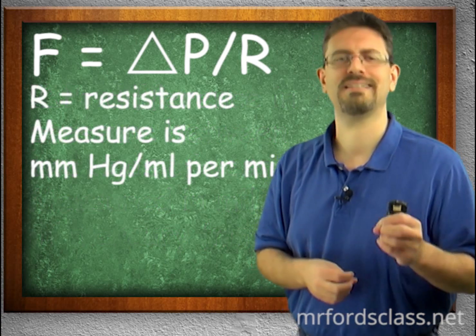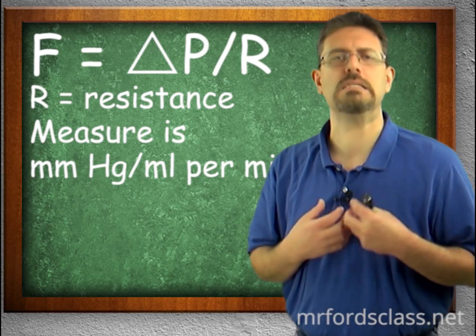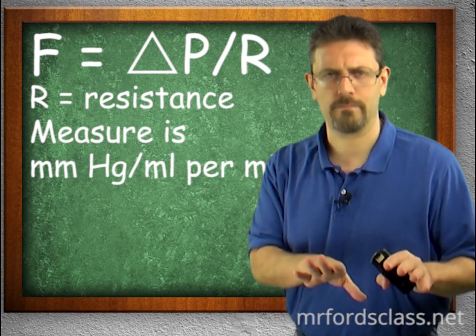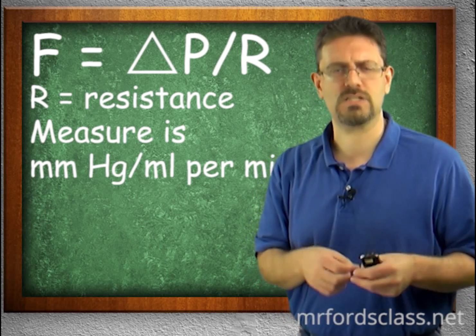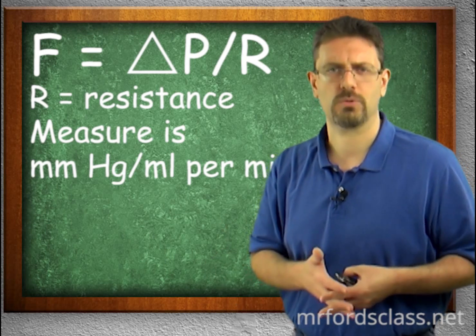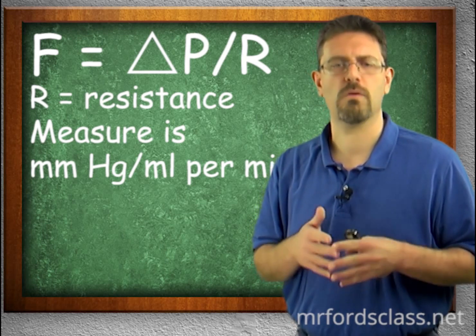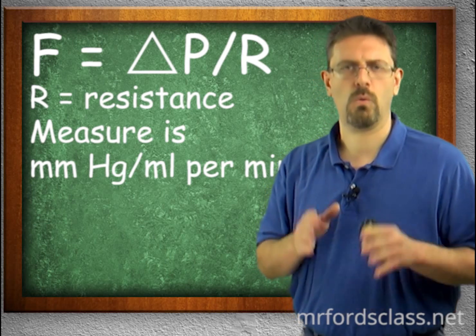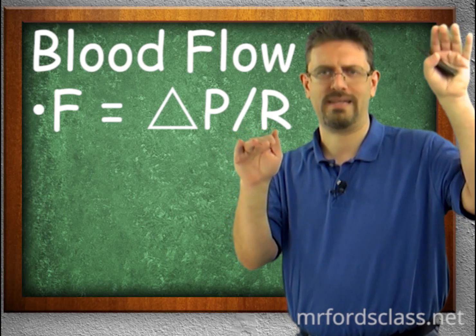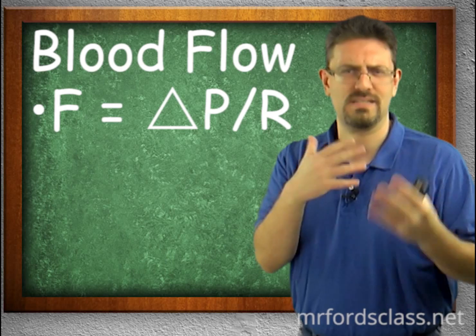R stands for resistance. Resistance in this case is the resistance to the flow of blood, and yes, there is resistance in our circulatory system. We measure resistance in millimeters of mercury over milliliters per minute. Putting it all together: blood flow depends on the pressure difference from one end of the tube to the other, as well as how much resistance the blood is facing.